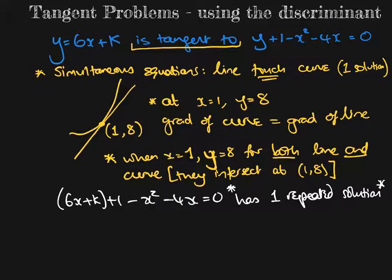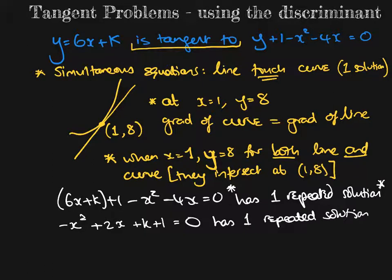Let's organize it a little bit better. What have we got? -x². How many x's have I got? -4x and 6x, that's +2x. And then I've got a +k and a +1. And I'm going to write it again because it's so important: has one repeated solution. I am not trying to solve this equation to find out where they cross, or where they don't really cross, they touch.